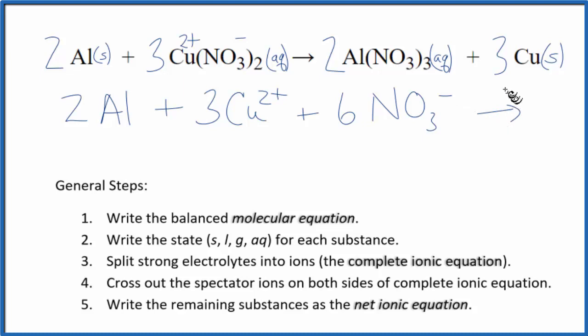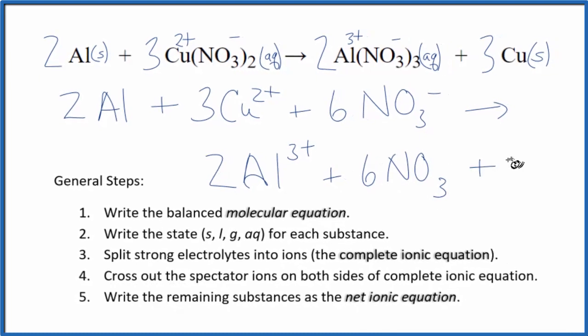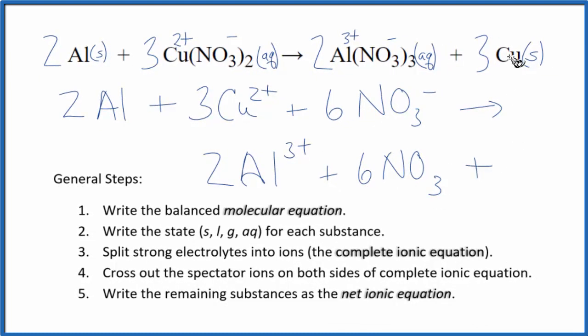Those are the reactants in our complete ionic equation. On the product side, nitrate, 1 minus; the aluminum, always 3 plus. 2 aluminum ions, plus 2 times the 3, so again we have 6 nitrate ions, plus the copper, we have 3 of those. So this is the complete ionic equation.